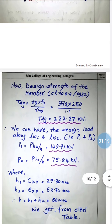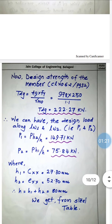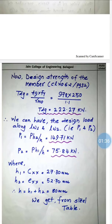We are asked to find out the design strength of the member. As per IS 800 Clause 6.2, page 32, we can find out the design strength of the member based on gross yielding of the section.